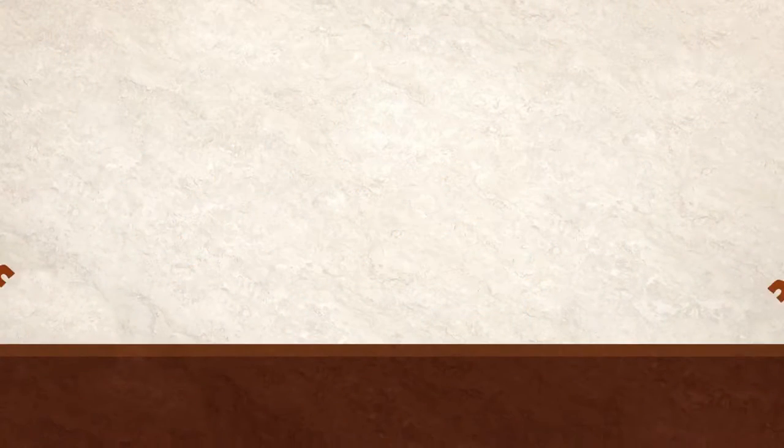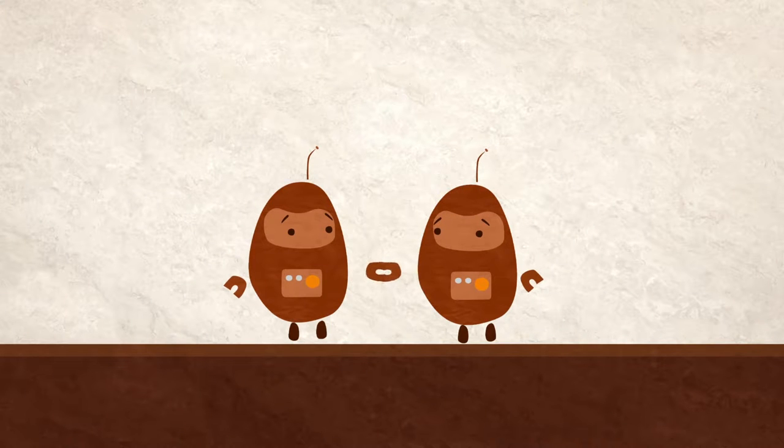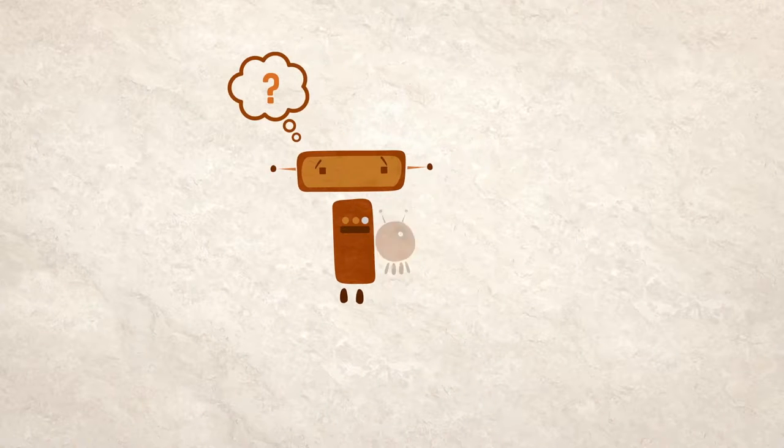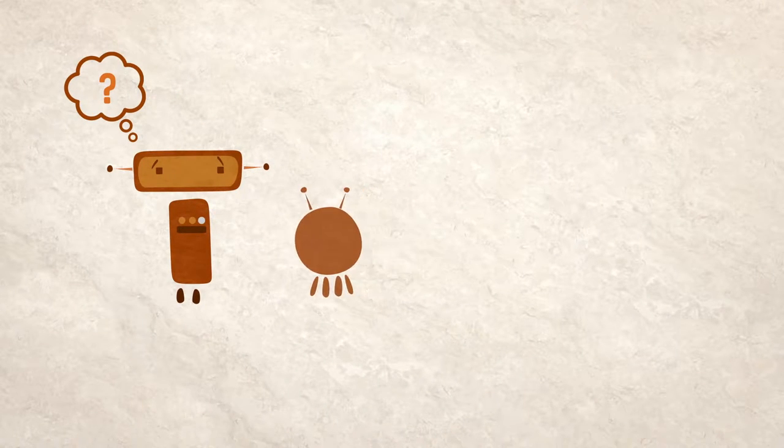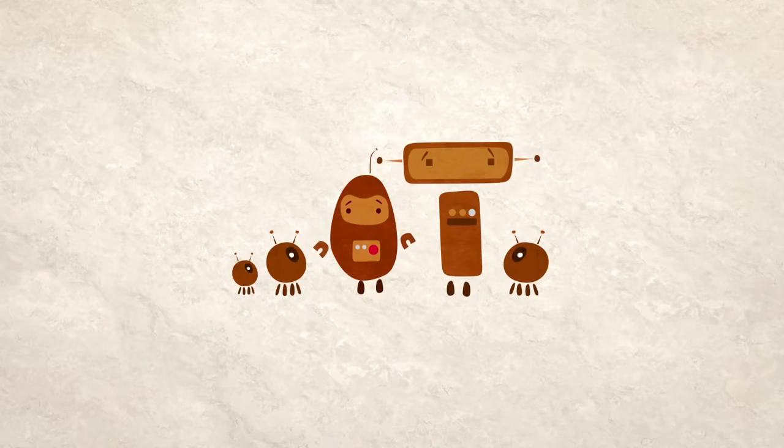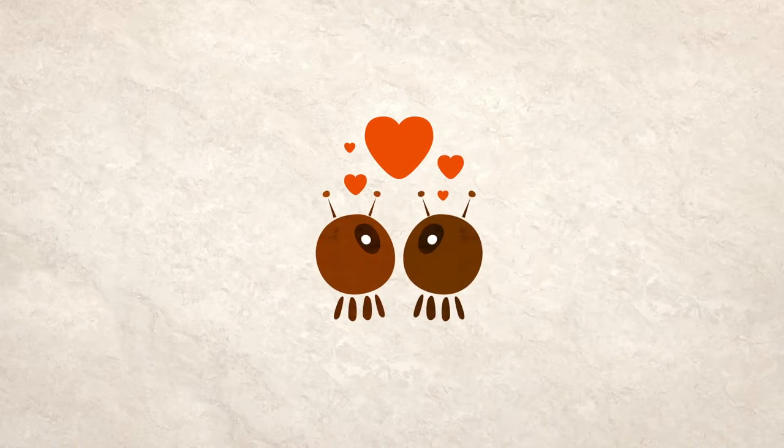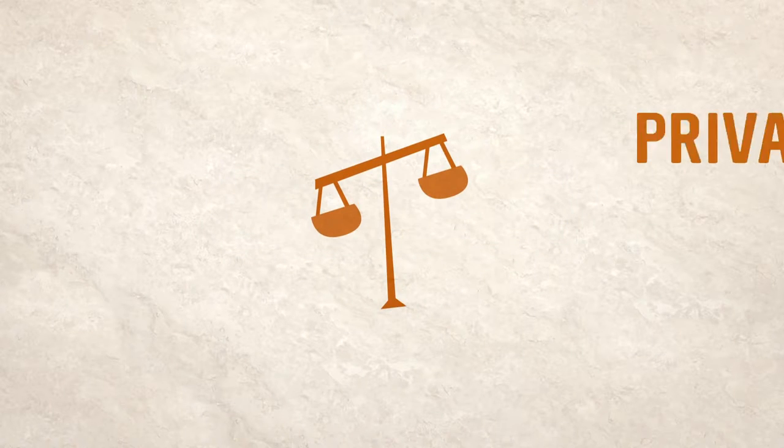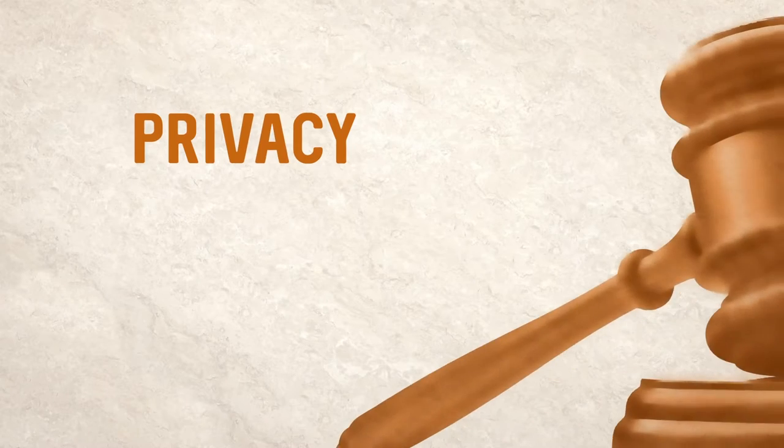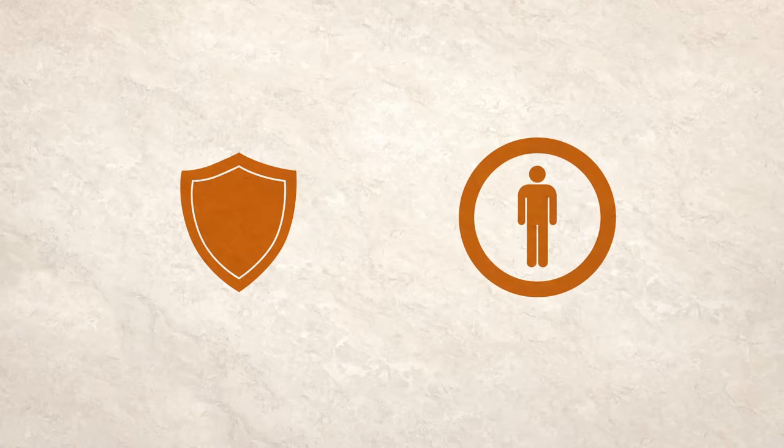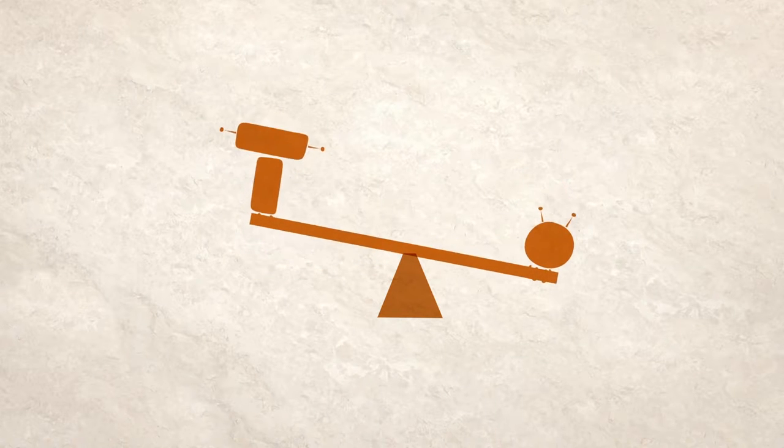Everyone has the right to the protection of the law against such interference or attacks. This is simple enough. Agreeing on what privacy actually means here has proved harder. Depending on the context, it can mean the right to freedom of thought and conscience, the right to be left alone, the right to control one's own body, the right to protect your reputation, the right to a family life, or the right to a sexuality of your own definition.